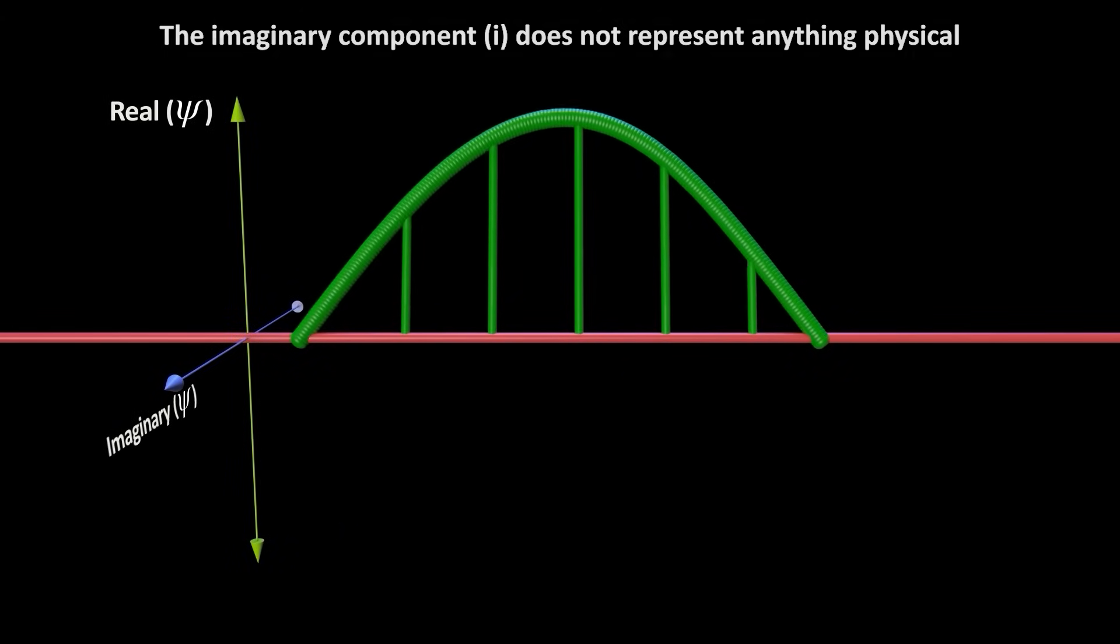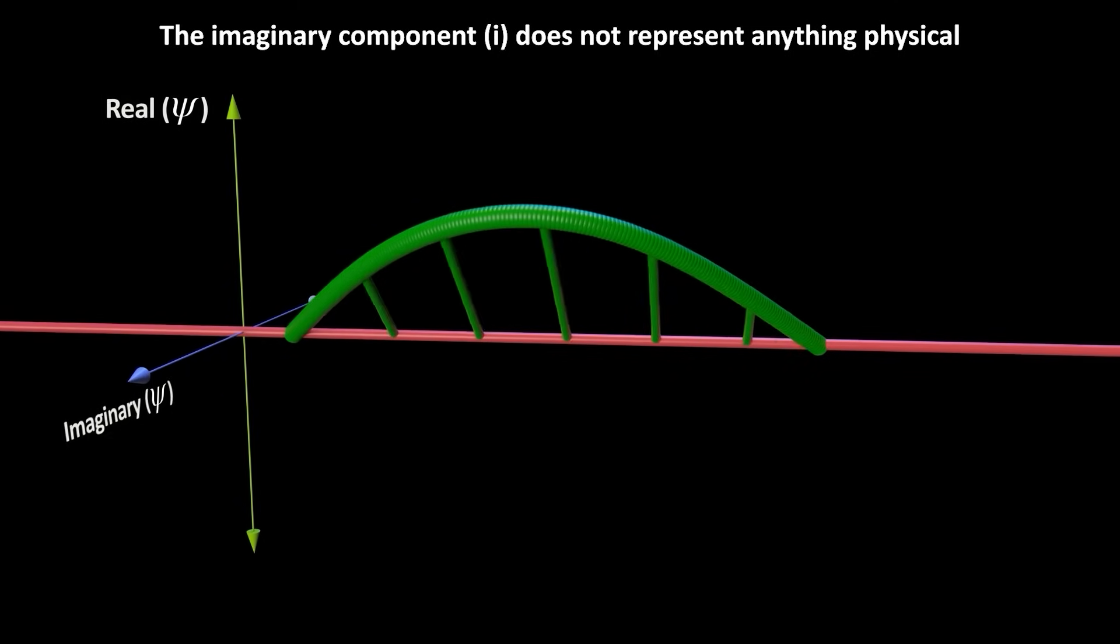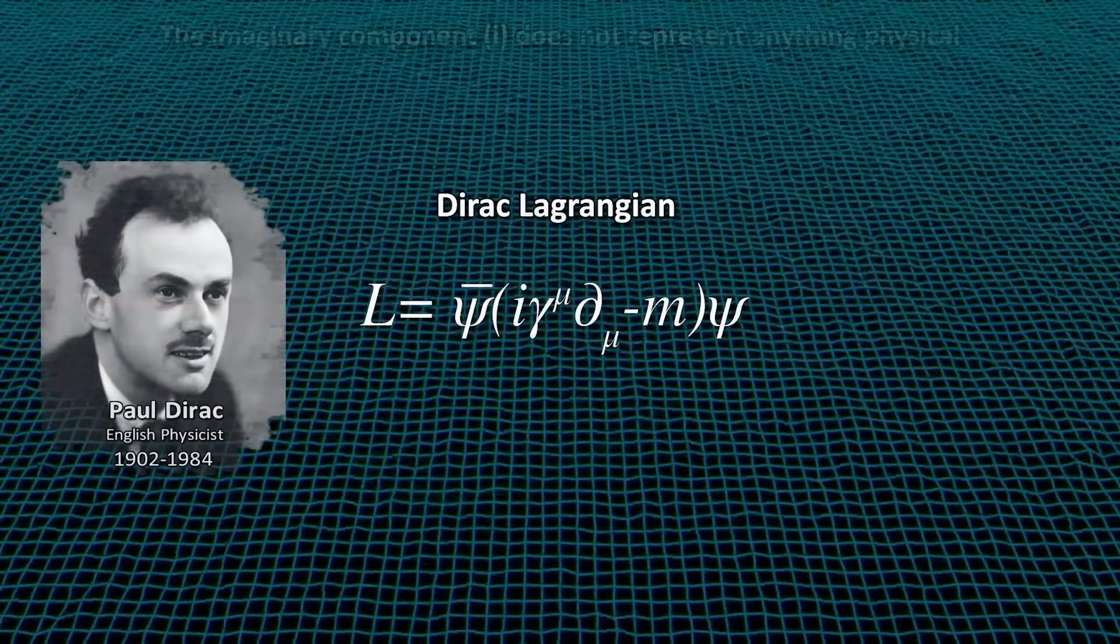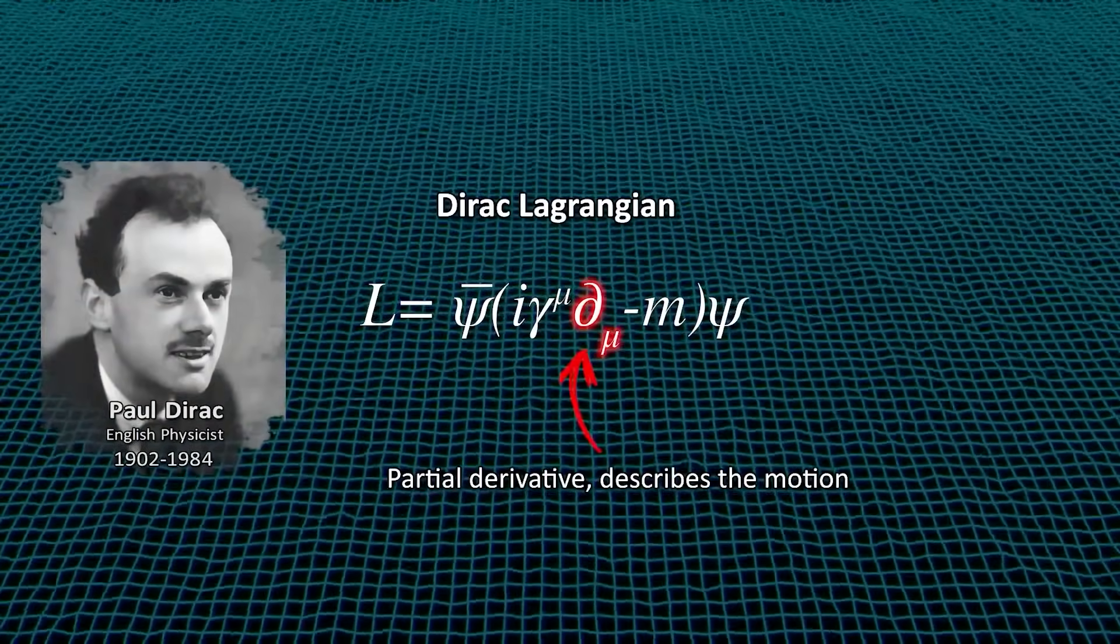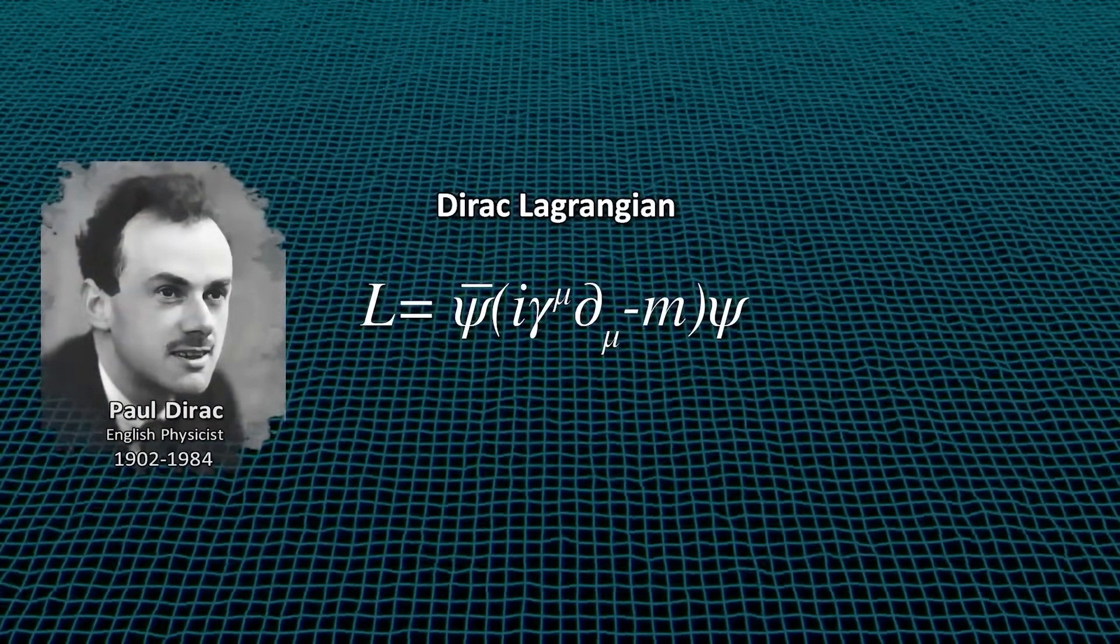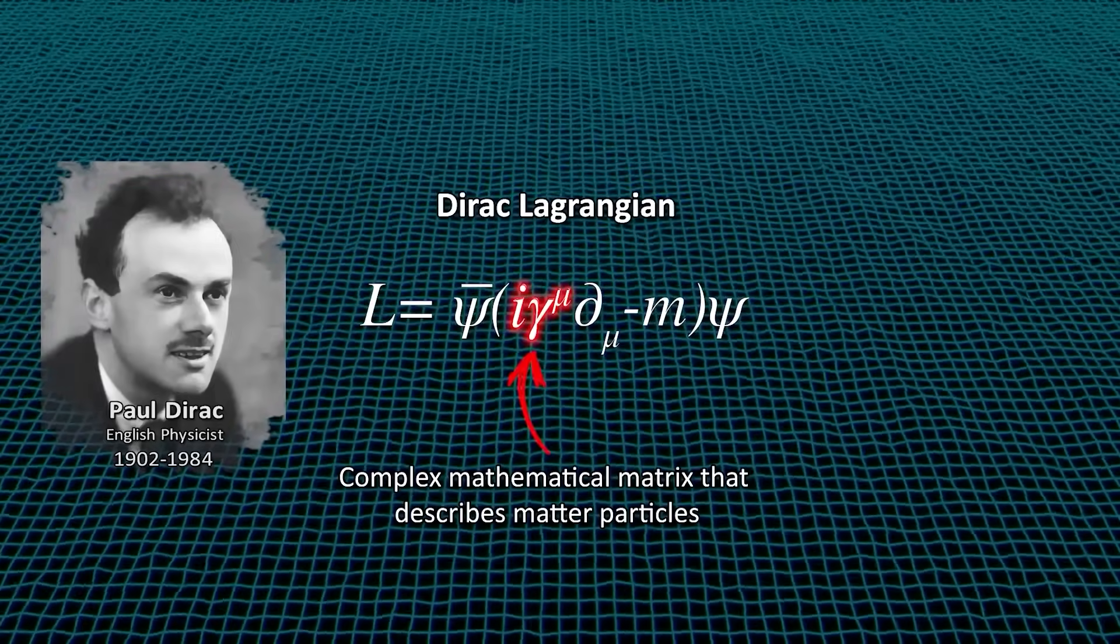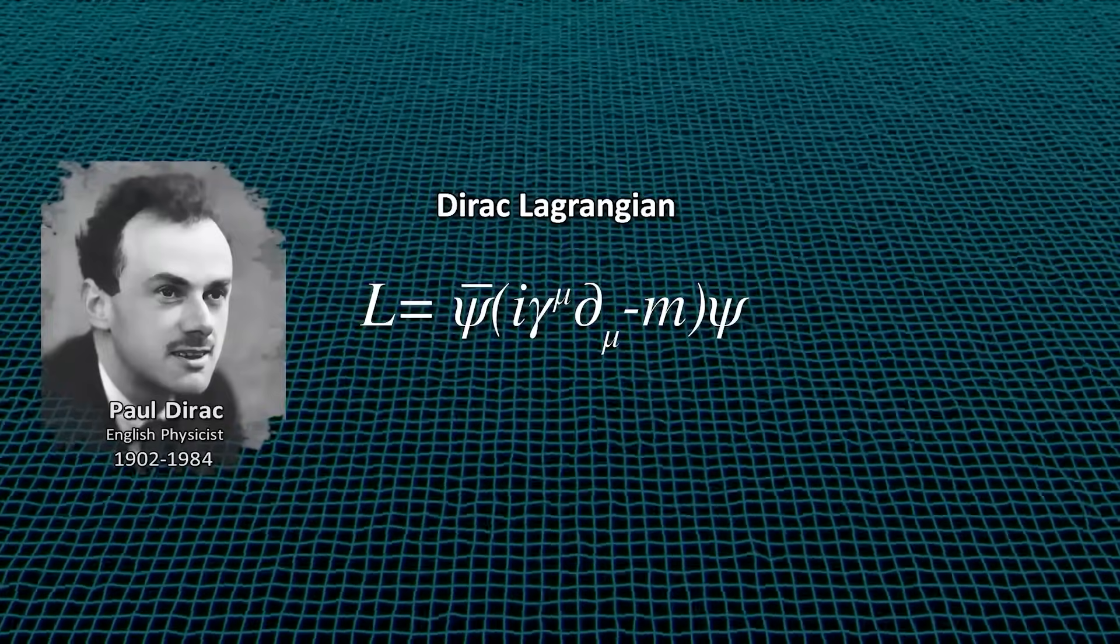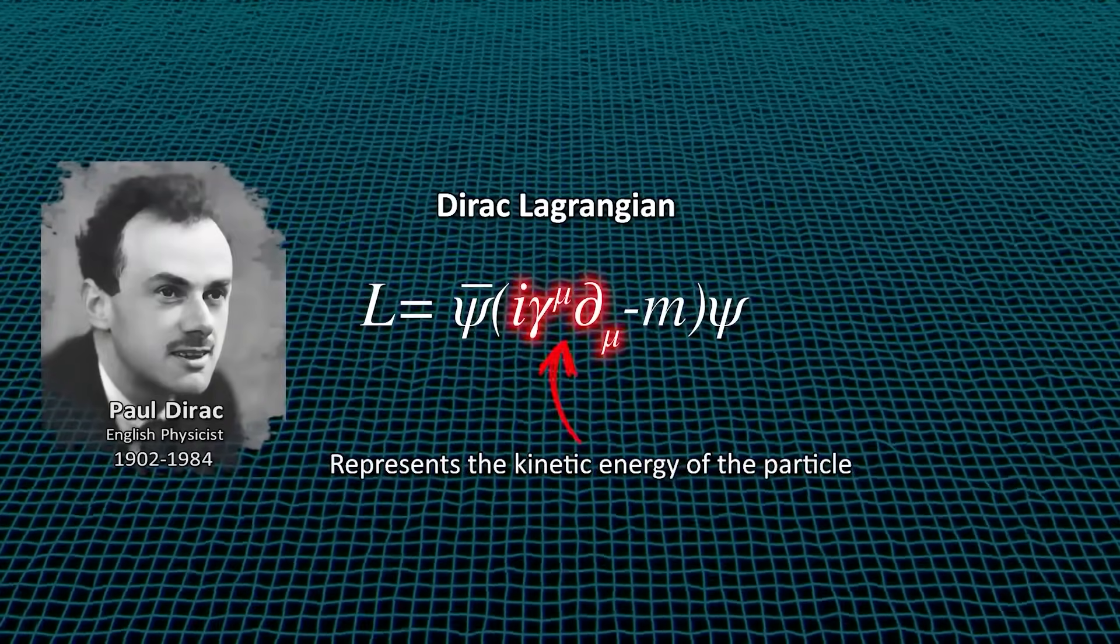It is a mathematical convenience. The i doesn't represent anything physical. In the end, for anything measurable, we will only have real numbers. So you might say the i is just a means to an end. The partial derivative, del mu, just captures the change in the coordinates, which is motion. The i gamma mu is a complex mathematical matrix term introduced by Dirac to correctly describe matter particles. For now, don't get bogged down by where it comes from, just know that it represents the kinetic energy of the particle.